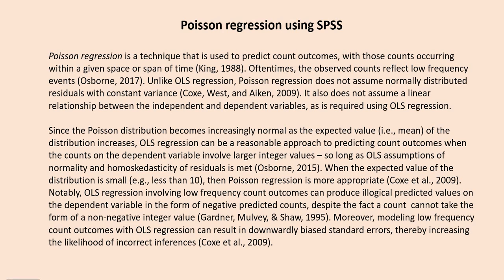Now, since the Poisson distribution becomes increasingly normal as the expected value of the distribution increases, OLS regression can be a reasonable approach to predicting count outcomes when the counts on the dependent variable involve larger integer values, just so long as OLS assumptions of normality and homoscedasticity of residuals are met. When the expected value of the distribution is small, Poisson regression is more appropriate. Notably, OLS regression involving low frequency count outcomes can produce illogical predicted values in the form of negative predicted counts.